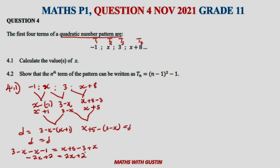Now simplify: take the x terms to one side, giving 4x equals 2 minus 2, so 4x equals 0, therefore x equals 0. It is possible to get x equal to zero — don't panic. As long as everything was done correctly and we double-check our arithmetic, there is nothing to worry about.